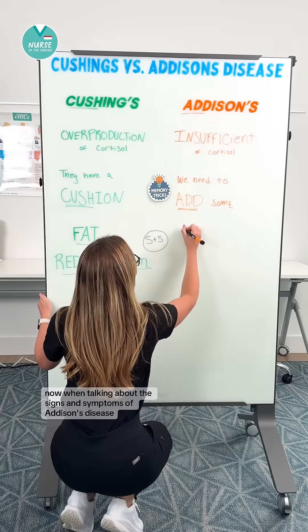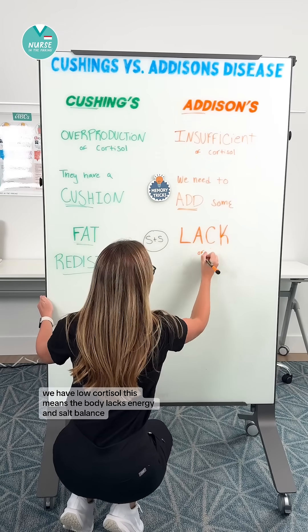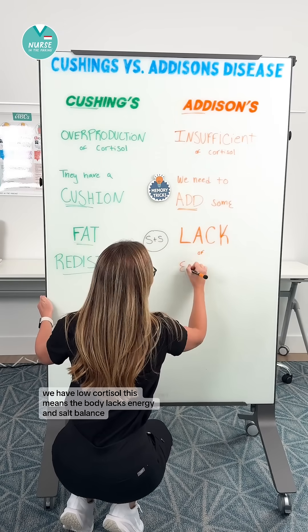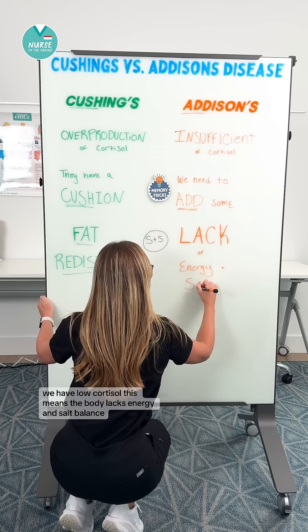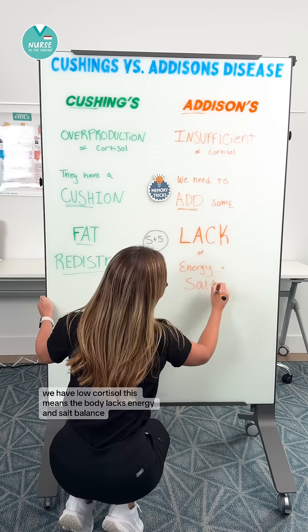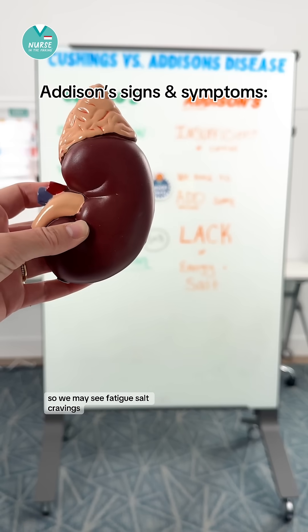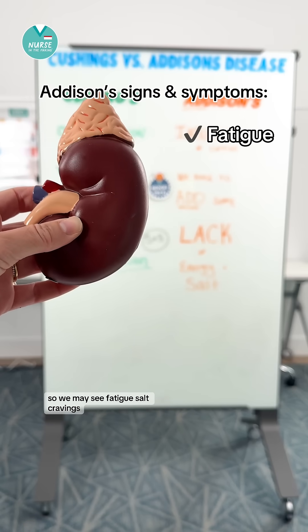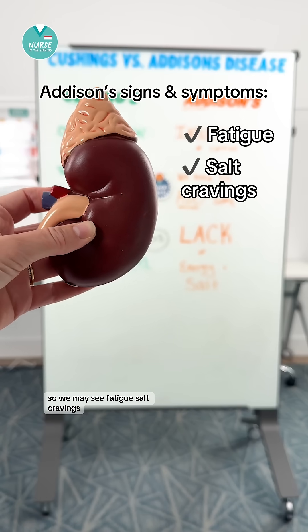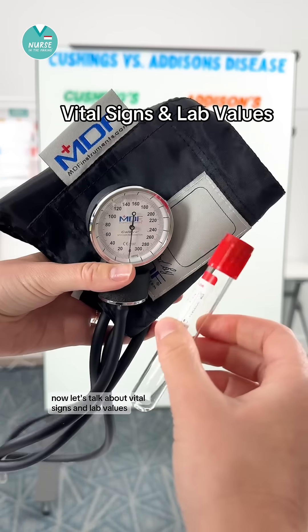When talking about the signs and symptoms of Addison's Disease, we have low cortisol. This means the body lacks energy and salt balance. So we may see fatigue, salt cravings, muscle weakness, and low blood pressure.